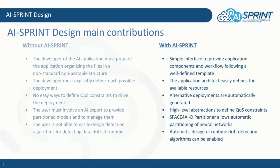With AI Sprint, the design of the AI-based application becomes much easier. Both the application developer and the application architect are able to provide the implementation of the components as well as the configuration files and the description of the available resources and candidate assignments in a very easy way by using a well-defined application template. Alternative deployments are automatically generated in the case of components with degraded accuracy, and high level abstractions are available to define quality of service constraints to drive the application deployment. The Space4ID partitioner tool allows the automatic partitioning of neural network based components, and finally the automatic design of runtime drift detection algorithms can be enabled to detect data drift at runtime.